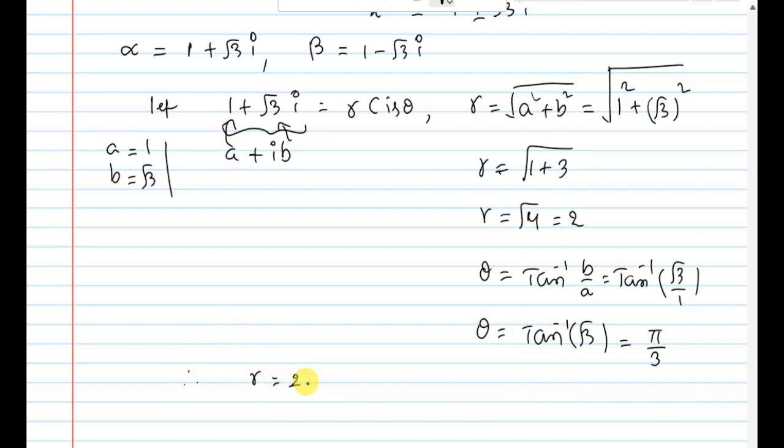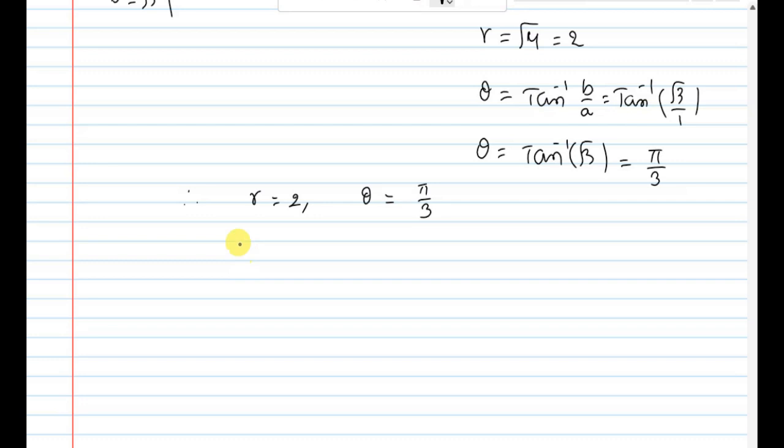Therefore, r value is 2, theta value is pi by 3, for the complex number 1 plus root 3i. Therefore, alpha equals 1 plus root 3i, that equals 2 cis pi by 3.